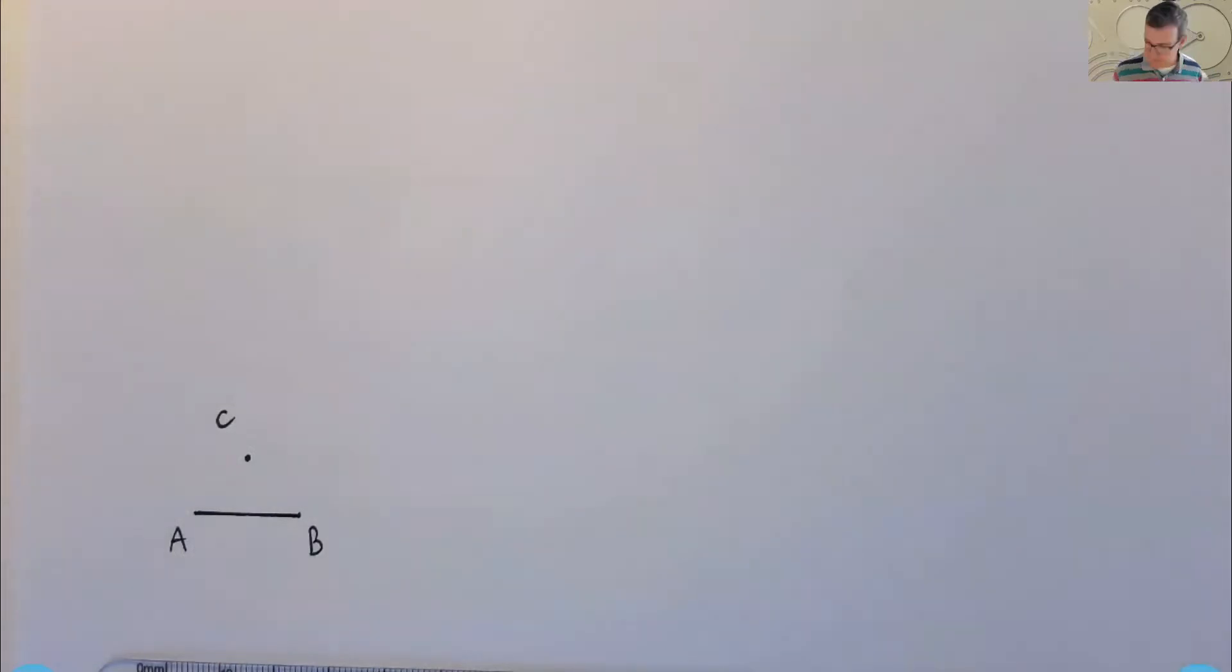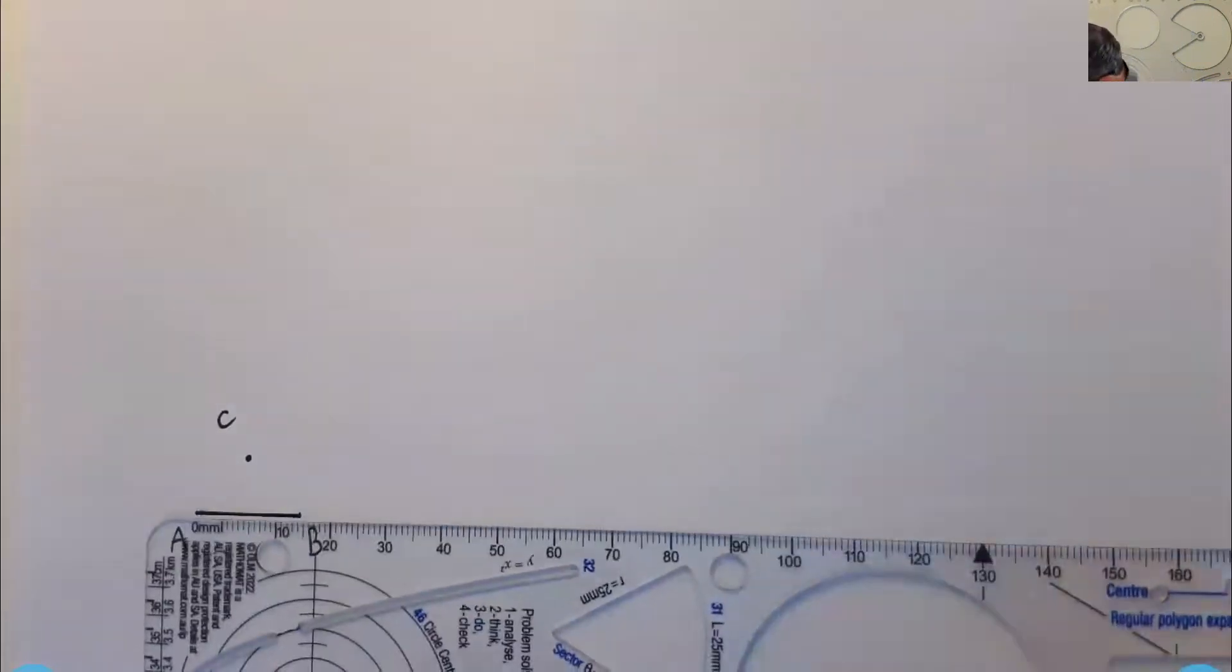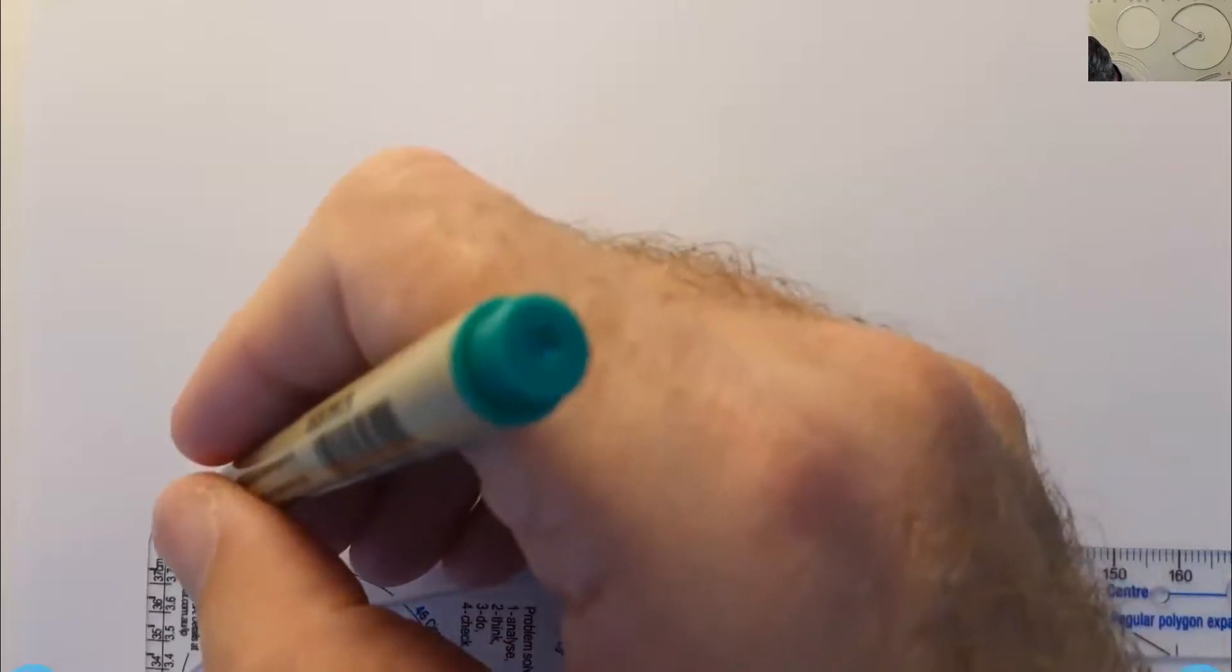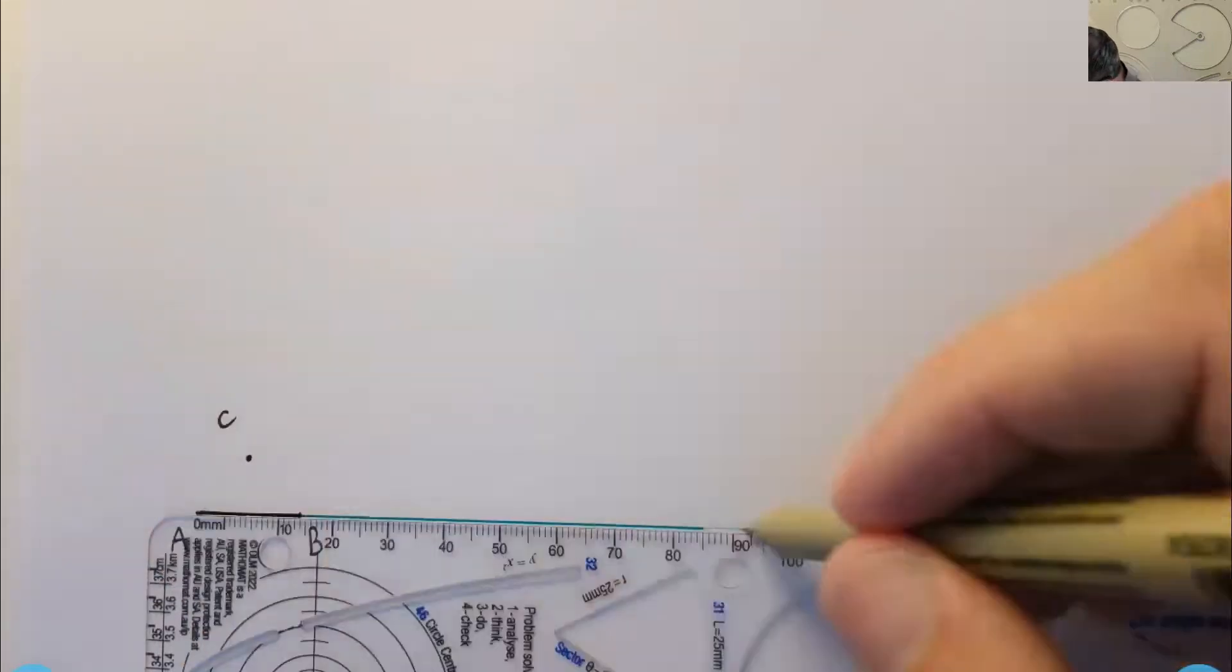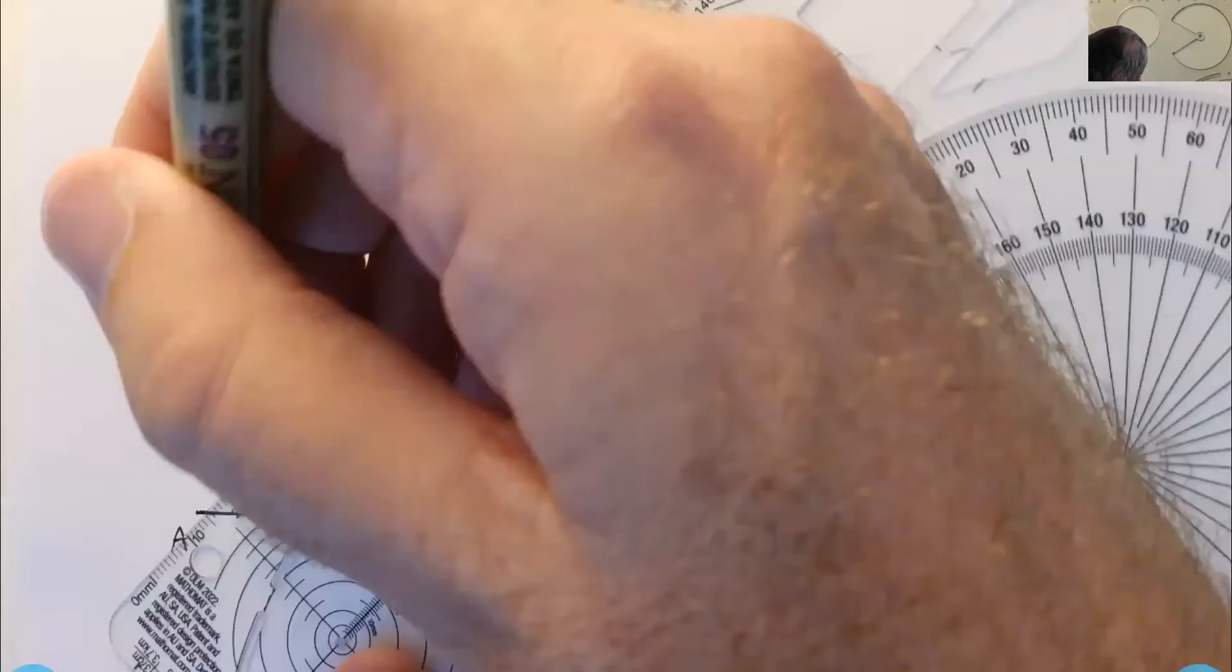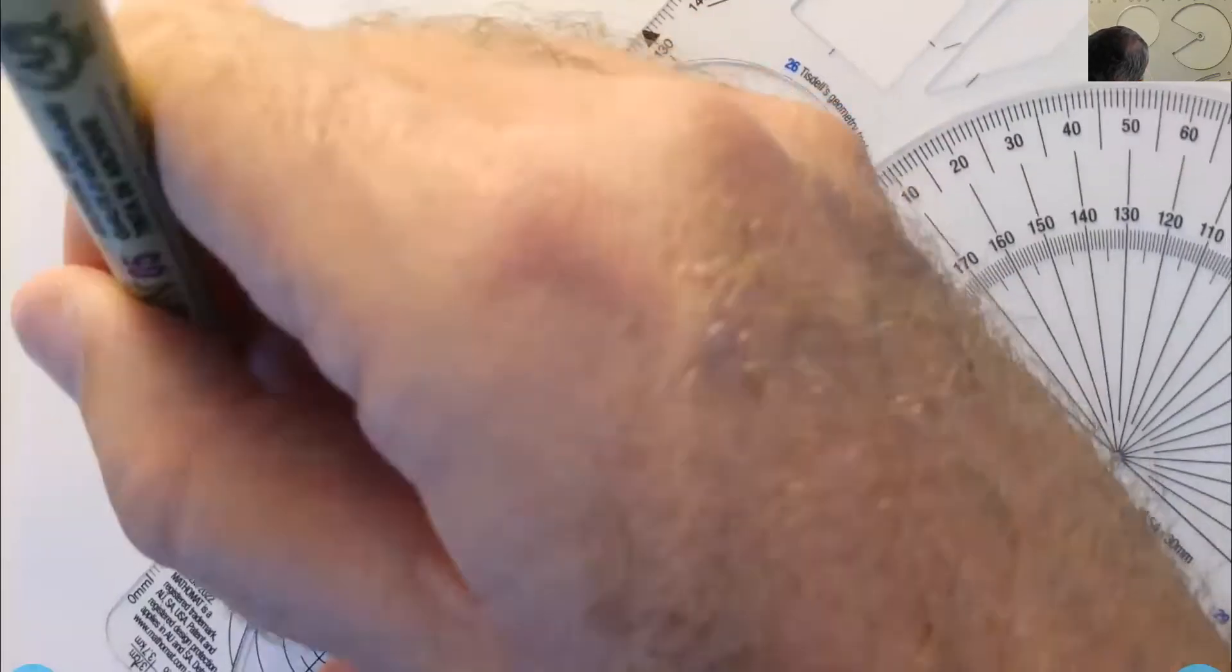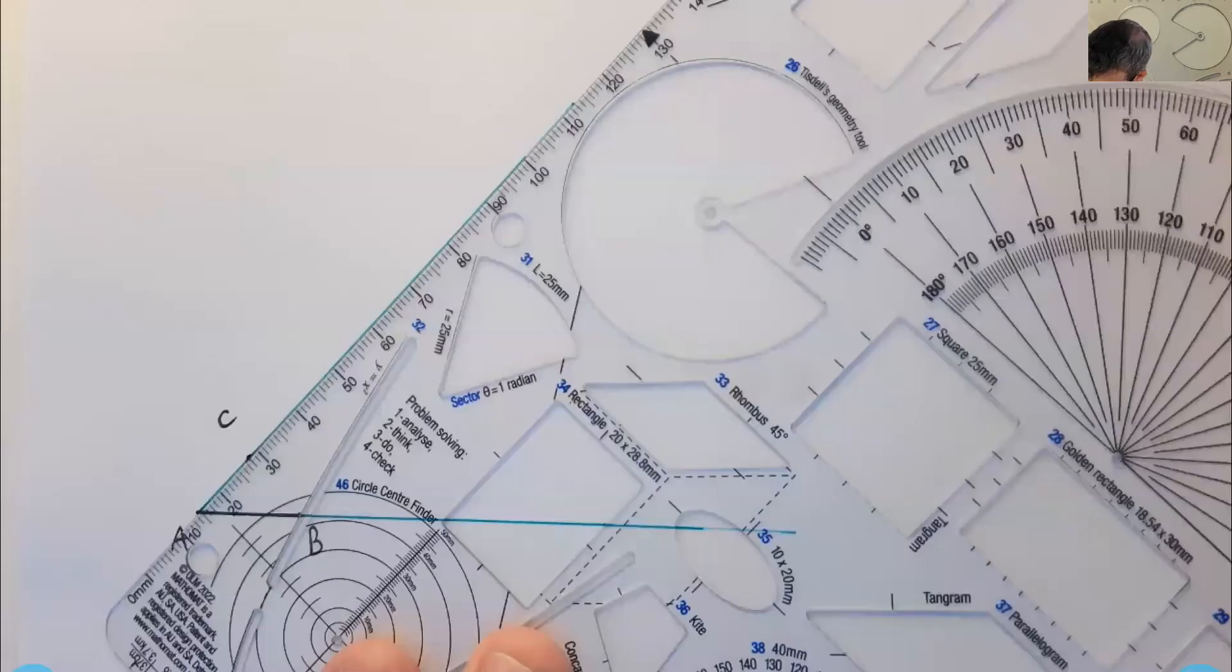So let's firstly... First thing I'm going to do is actually extend this line segment AB. That's just going to help me a bit later. All right. And I'm going to join between A with C.